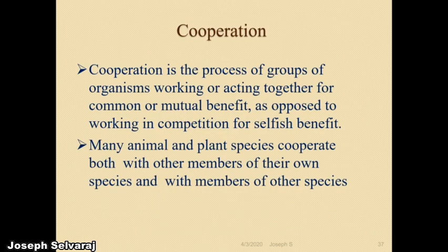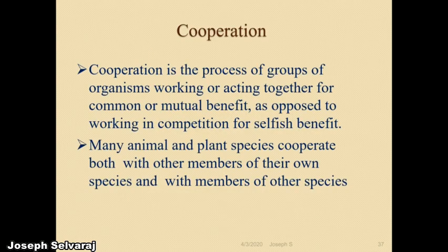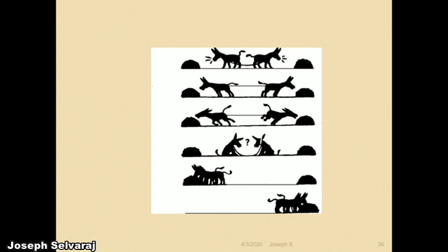This is the best example for cooperation: two donkeys try to eat food from two different sides, pulling in opposite directions without cooperation. They both get tired, then plan together, go in one direction to eat, and after completing, go to the next side. Cooperation is the process of groups or organisms working together for a common or mutual benefit.